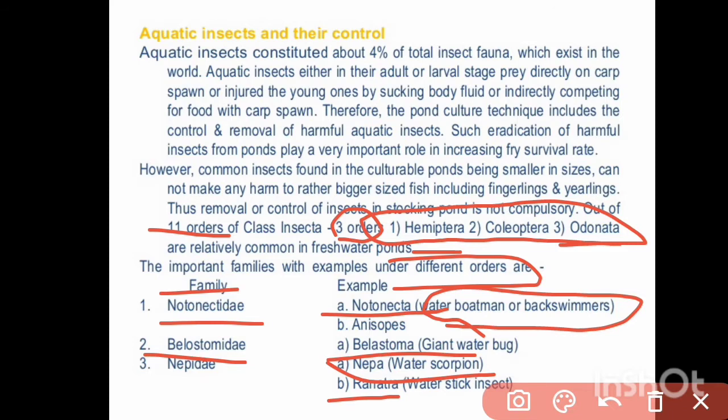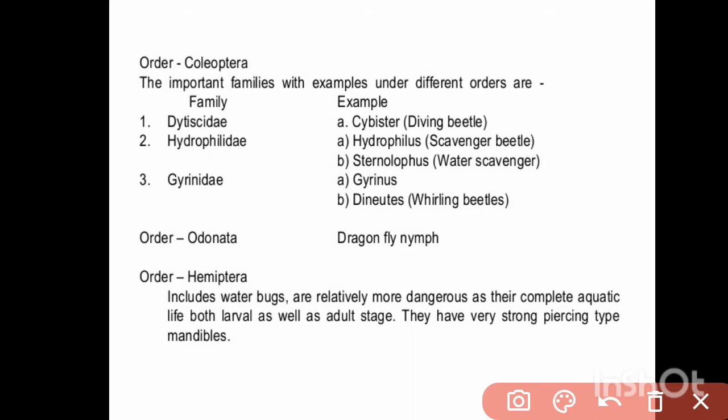Order Coleoptera: Family Dytiscidae — Cybister — Diving Beetle; Family Hydrophilidae — Hydrophilus — Scavenger Beetle. Order Odonata: Dragonfly Nymph.